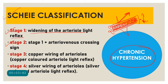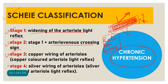Stage 2 involves arteriovenous crossing signs. The three AV signs are the Salus sign, the Bonnet sign, and the Gunn sign. Whenever AV changes are present, they represent stage 2 in the chronic hypertension classification. Stage 3 involves copper wiring of the arterioles. Stage 4 involves a silvery or whitish arteriole reflex, called silver wiring of the arterioles.